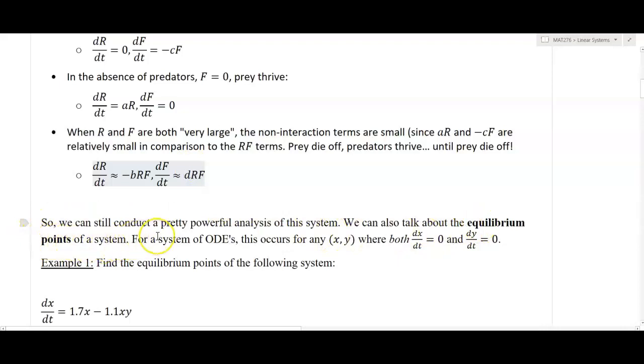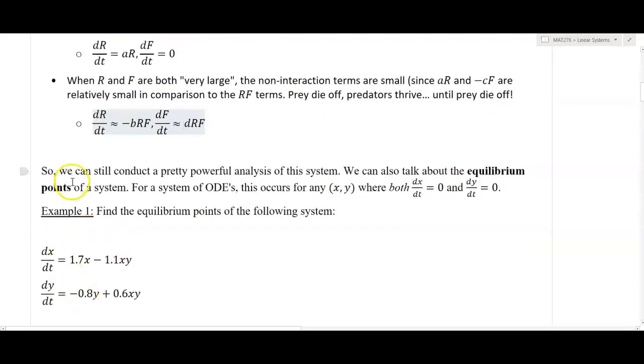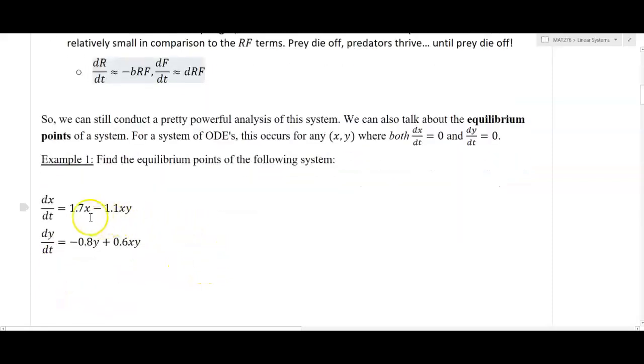For a system of ODEs, for the whole set of populations to be in equilibrium, we would expect that both rates of change are zero. In other words, if both dx/dt equals zero and dy/dt equals zero, what ordered pairs x and y will cause that to happen? Here I replace R with x and F with y to make this more mathematical. To find these equilibrium points, all I have to do is set the rates equal to zero and solve that underlying system.